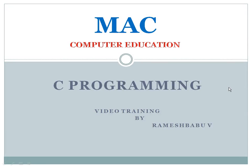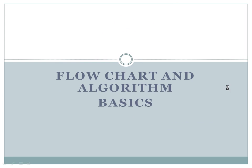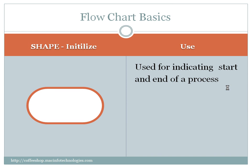Hello friends, in this video we are going to learn flowcharts and algorithms basics. So what are flowcharts? Flowcharts are actually pictorial representation of how the process is going on. It can be a C program or it can be an industrial process — any process. But when it comes to explaining a process, pictorial representation gives more idea than words. So pictorial representation of a process is called a flowchart.